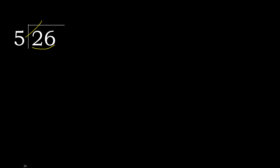But not greater. 5 multiplied by 6 is 30 — 30 is greater. 5 multiplied by 5 is 25 — 25 is not greater. 26 minus 25 is 1.